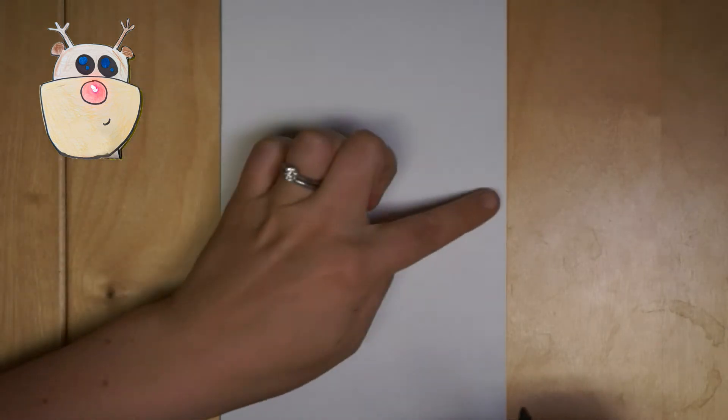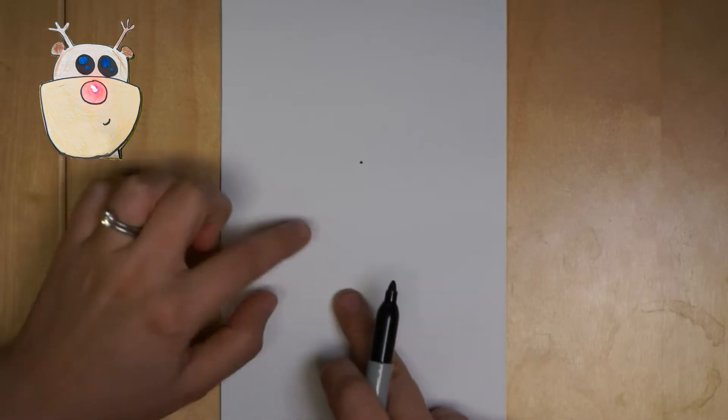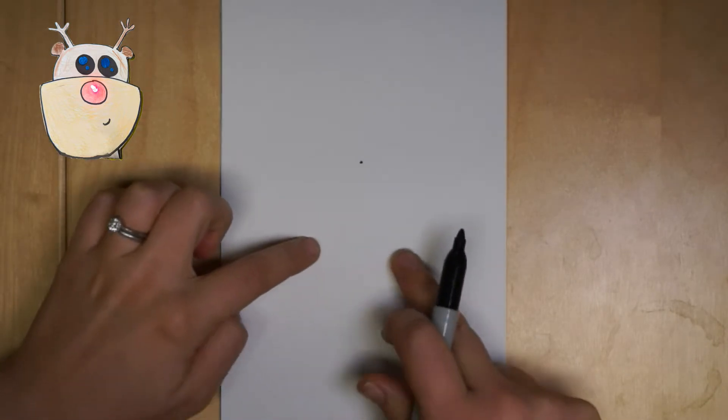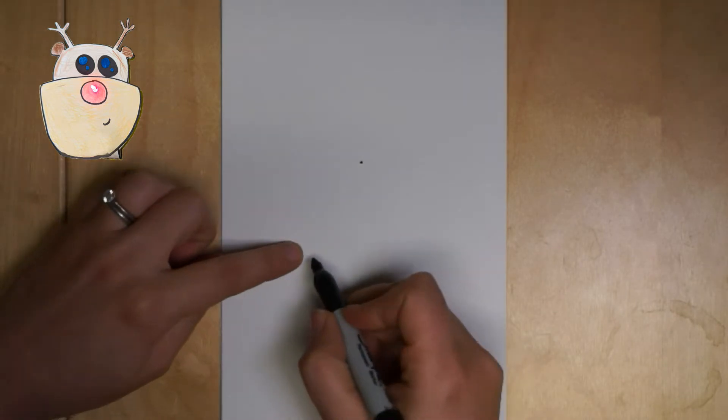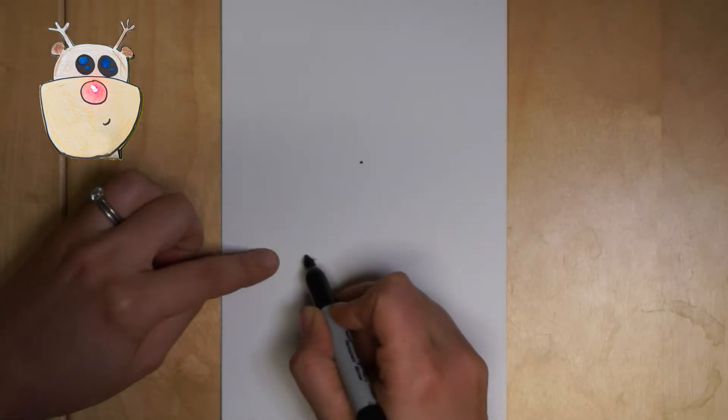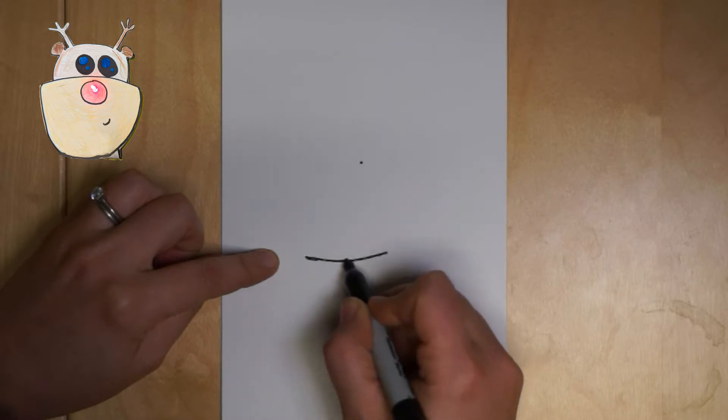Then I'm going to look at the half point again and come down a little bit maybe to here. The reason why we're leaving so much space here is we're actually going to create a tab that covers the back of our circuit. So I'm going to come in here and start just gently sketching the bottom of Rudolph's nose right there.